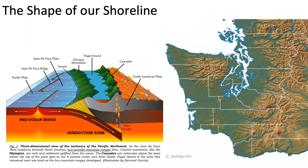Now let's talk about how we got the shorelines we have in Washington. Our landscape in western Washington was formed at large scale by tectonic subduction of the Juan de Fuca Plate underneath the western edge of the North American Plate, giving us two big mountain ranges — the Olympics to the west and the Cascades to the east — with a lowland trough in between that we call Puget Sound. This tectonic activity is still occurring at a very slow rate in the range of a couple millimeters per year.